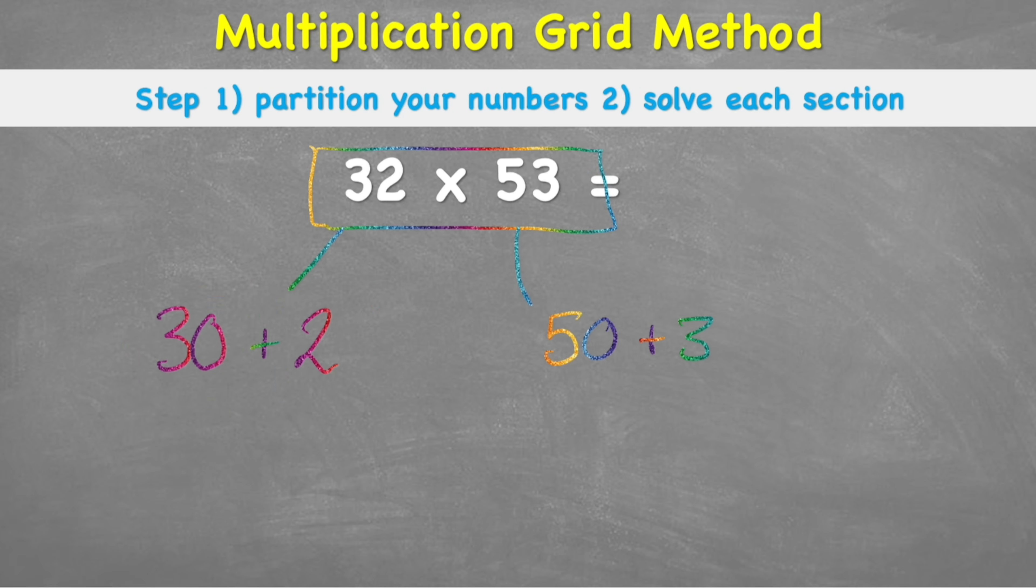And now what we can do is put this partition number into our grid so that we can then solve the individual parts of the multiplication before adding it back together.